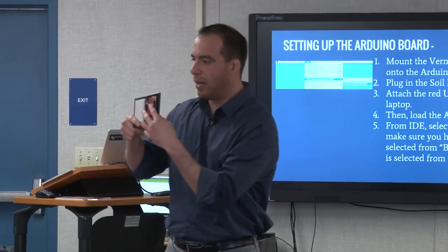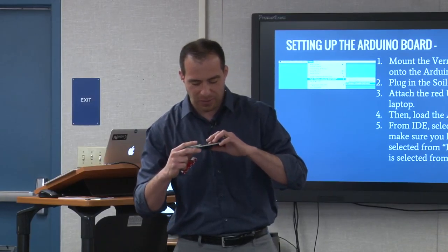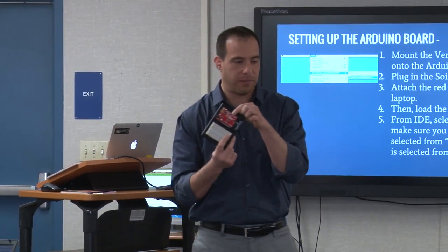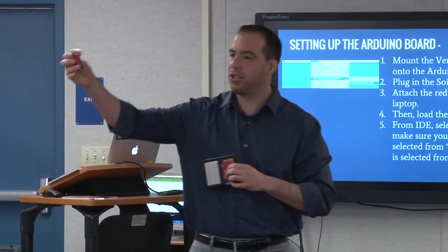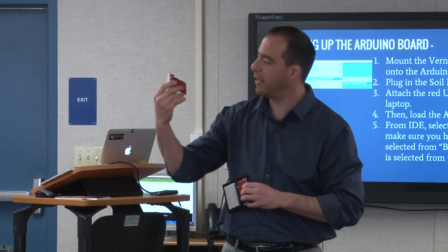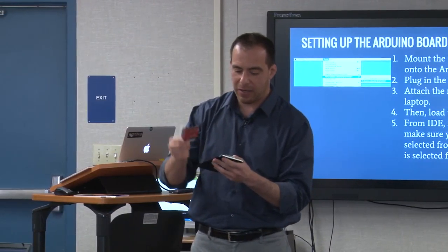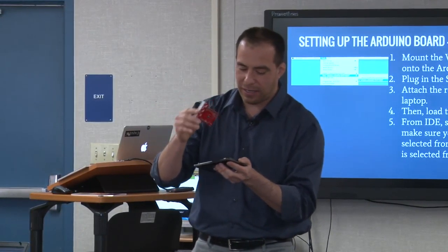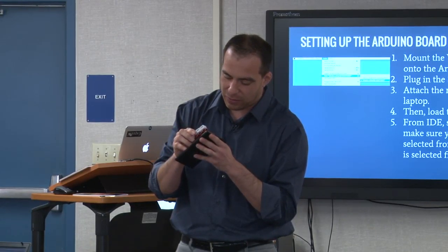To mount the shield onto the board, first inspect your Arduino. You'll notice one side says 'analog' with labels A1 through A6, and the other side says 'digital' with D1 through D13. The shield has matching A and D pins. It's important that the digital pins go into the digital side and the analog pins go into the analog side. Check with your partner to make sure they're doing it correctly too.